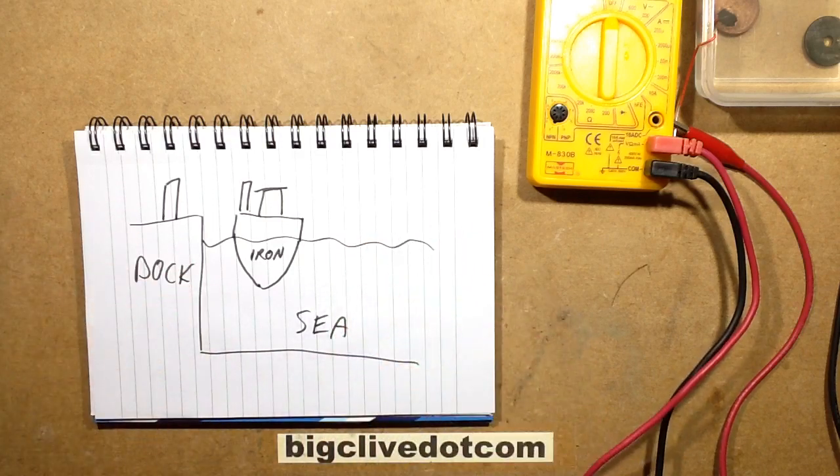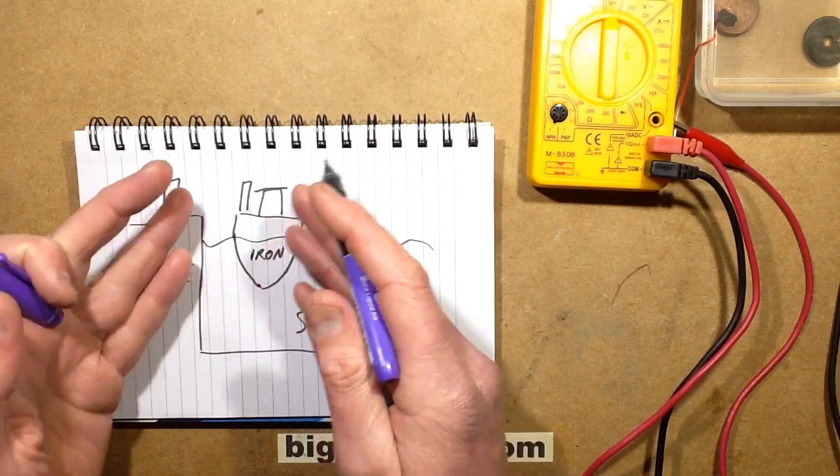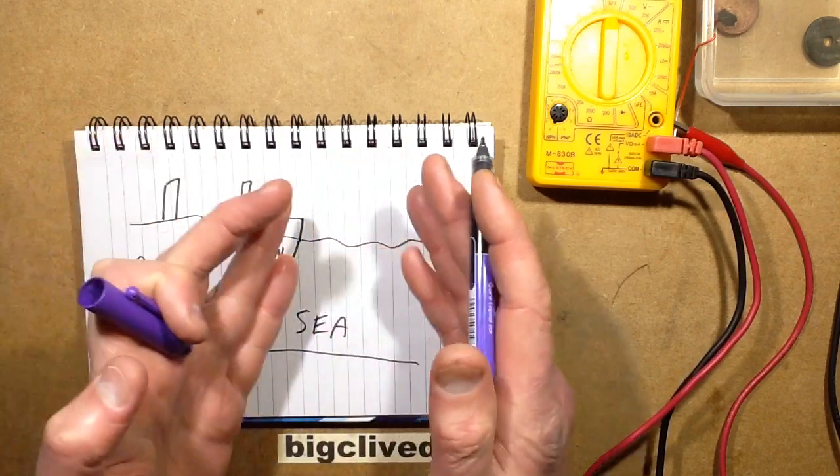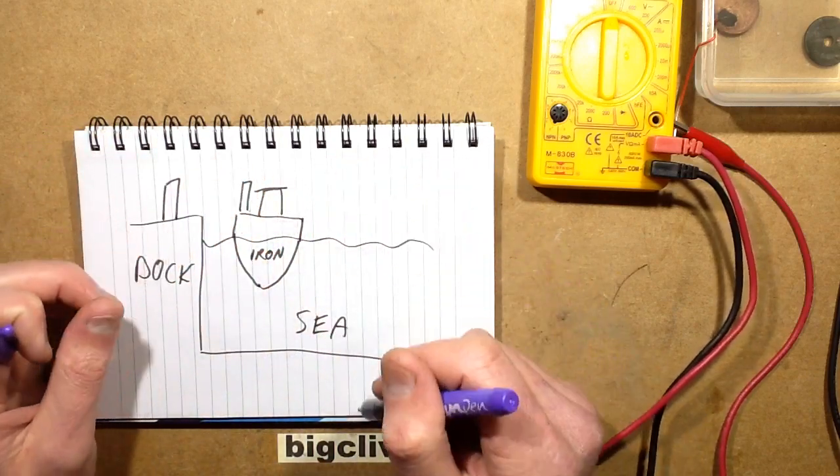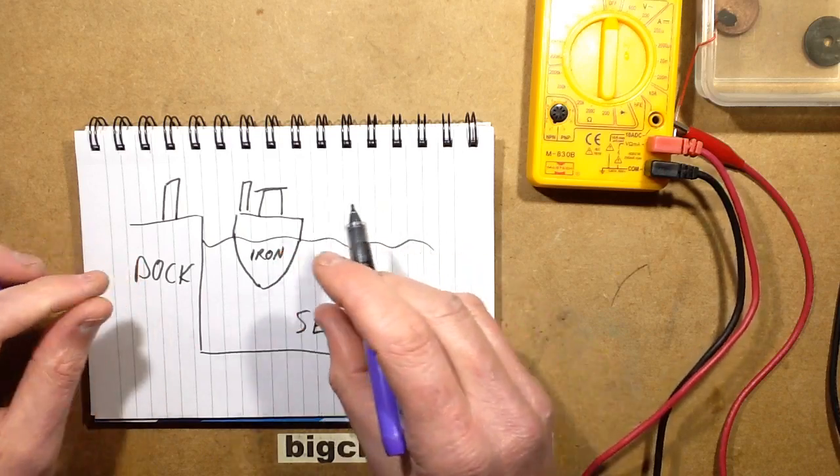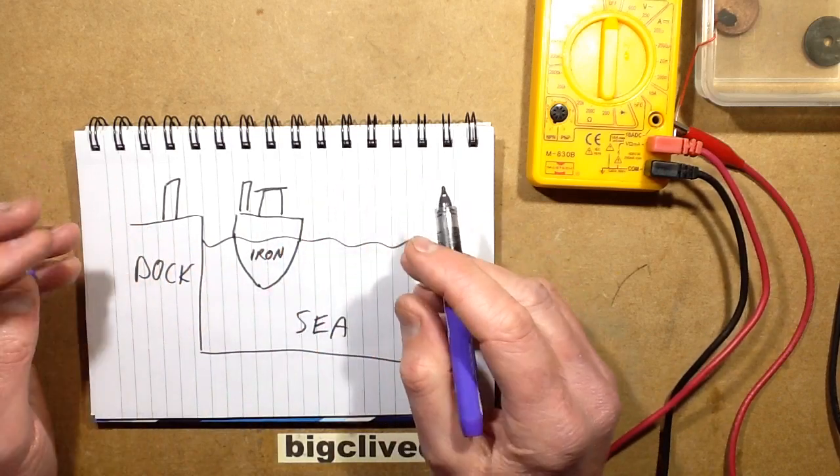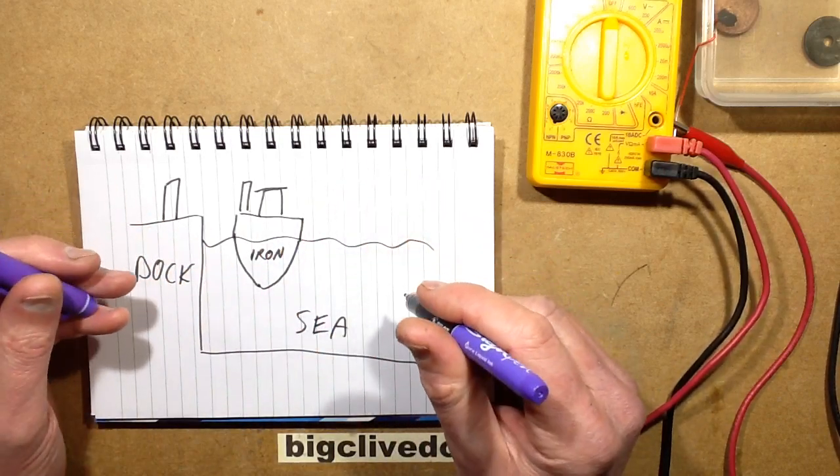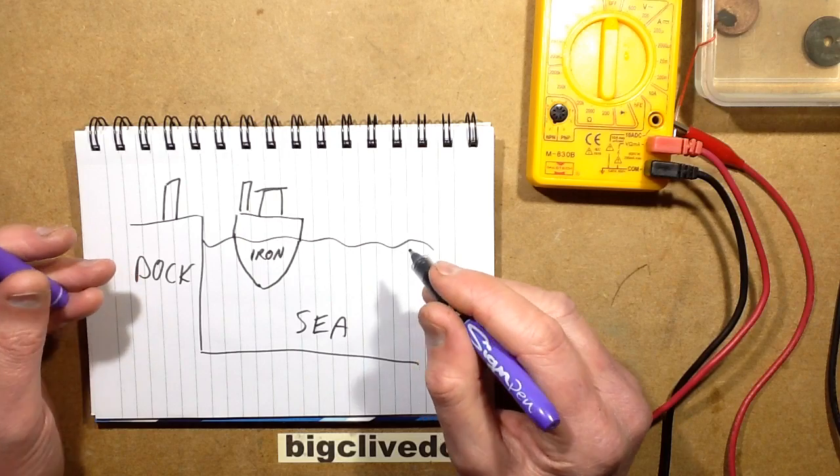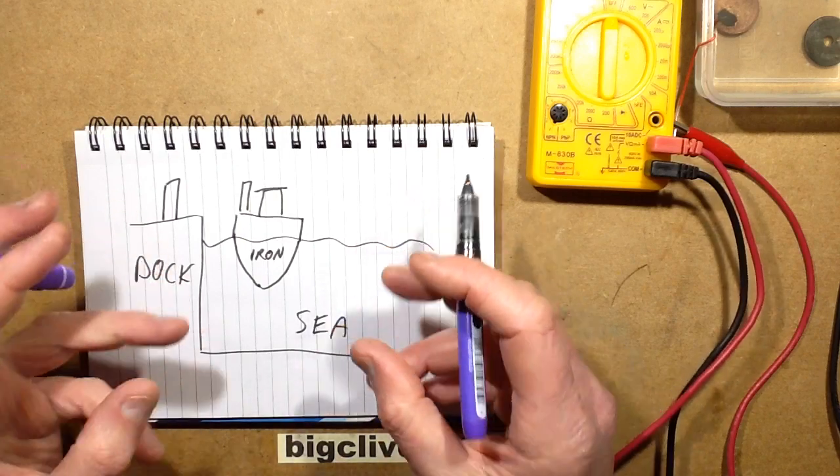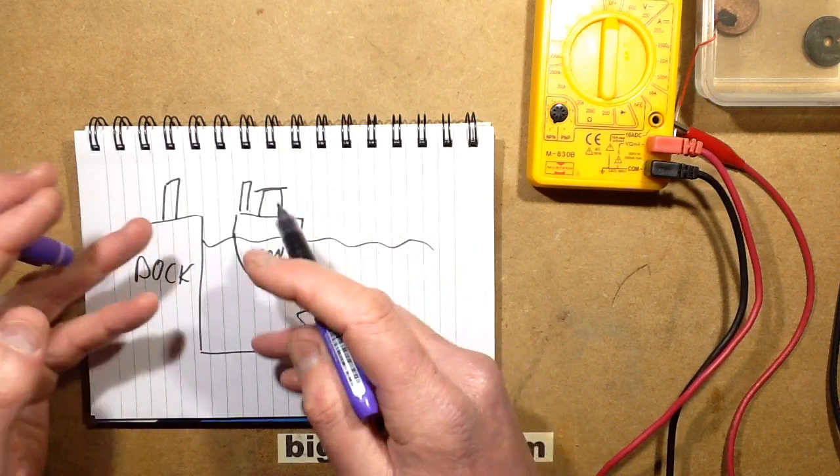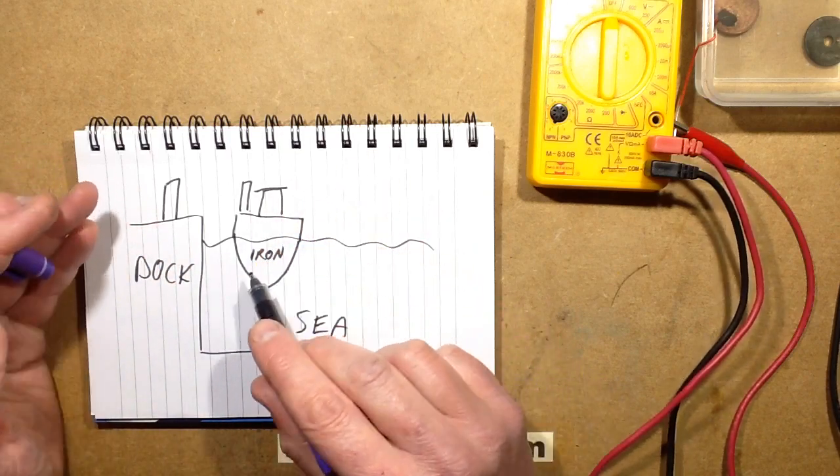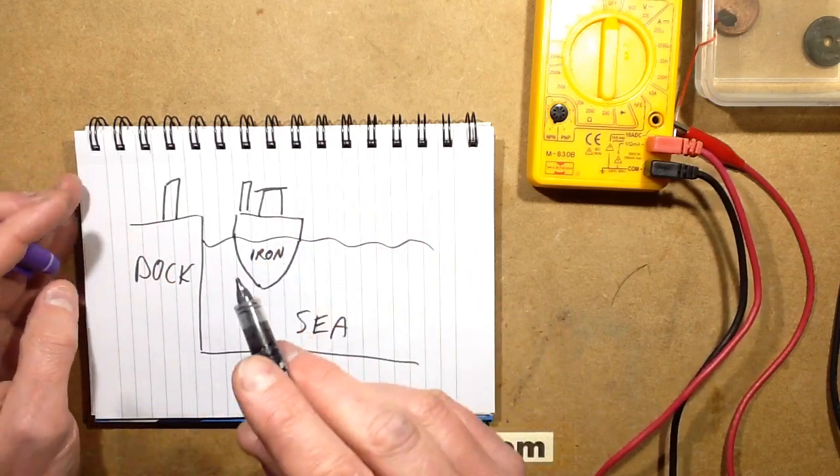You do get corrosion but it's quite easy to deal with just the boat on its own by using what's called a sacrificial electrode which can just be bolted onto the boat. It can be made of zinc or magnesium or aluminum, usually zinc, and it will preferentially corrode with an electrochemical reaction instead of the steel or the iron of the boat itself. However...